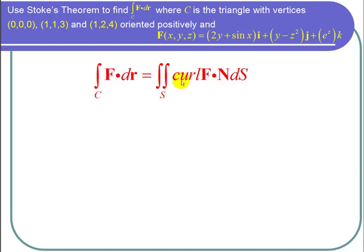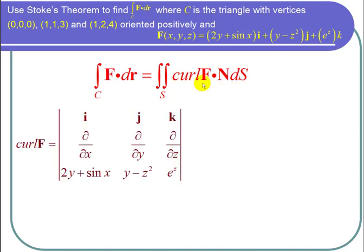So let's find the curl of f and the curl of f is the determinant of the matrix i, j, k, del over del x, del over del y, del over del z, 2y plus sine of x, y minus z squared, and e to the z.